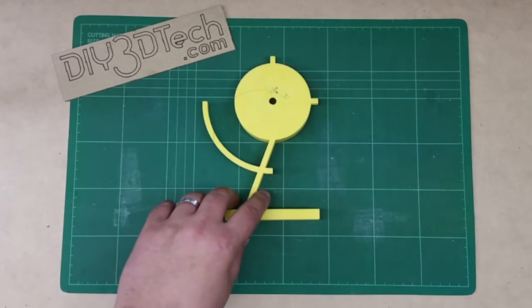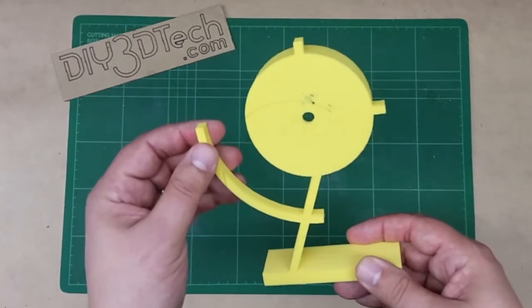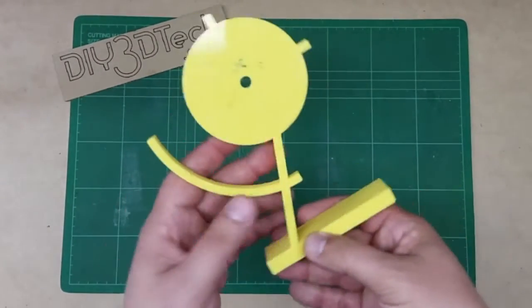Welcome to this edition of DIY3DTech.com. In this episode, we're going to take a look at printing this off. It's a clock, a desk clock stand, actually, or body that I found on Thingiverse.